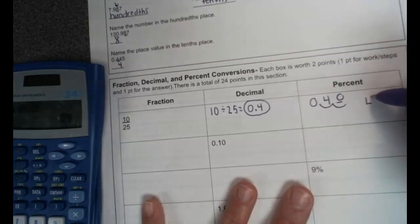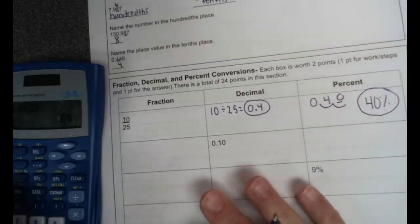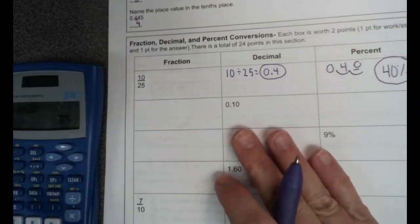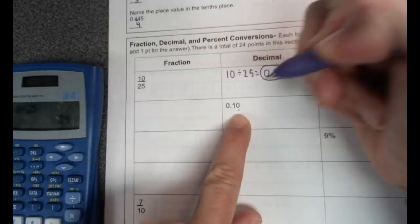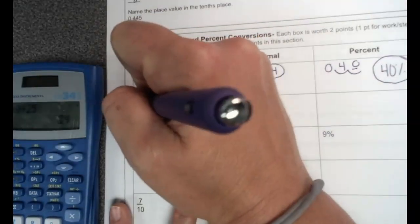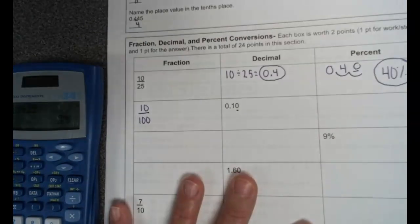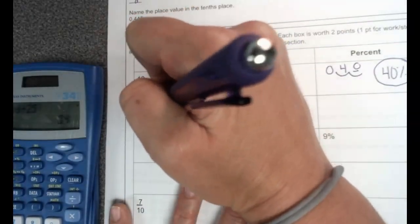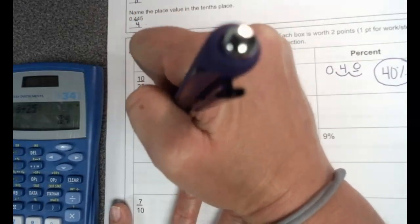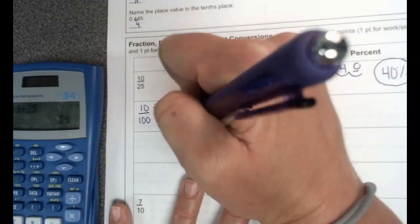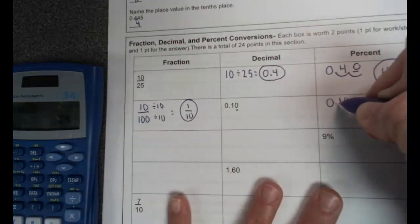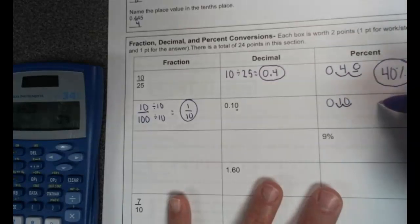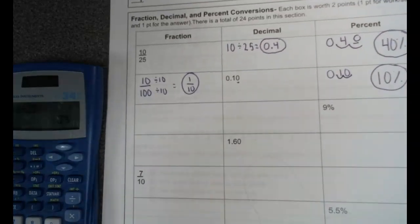To change a decimal into a percent, we move the decimal two spots to the right, and then here we put four zero, so that is 40 percent. On the next one we have a decimal, and I'm going to change that to a fraction. The zero is in the hundredths place, so I'm going to do 10 over 100, and I can see I can simplify that. I'm going to simplify that by 10, and I get one tenth as my fraction. Then we're going to look over at percent. I'm going to transfer my decimal over here, I'm going to move my decimal two times to the right, and I get 10 percent.